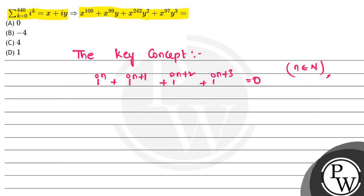If we expand Sigma K equals 0 to 440 of iota^K, we get iota^0 + iota^1 + iota^2 + iota^3 + iota^4, and so on, up to iota^440.